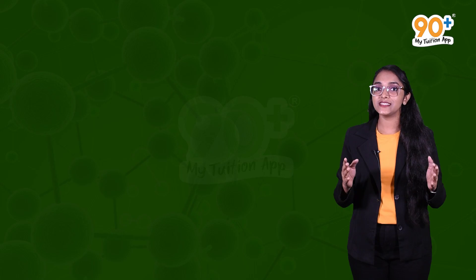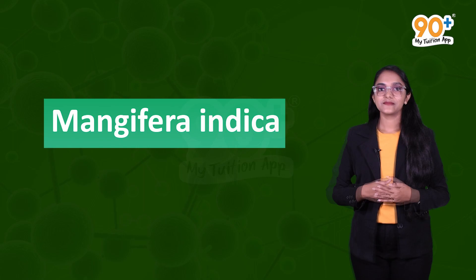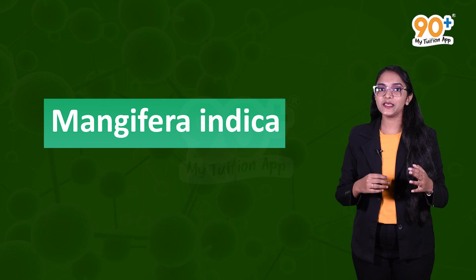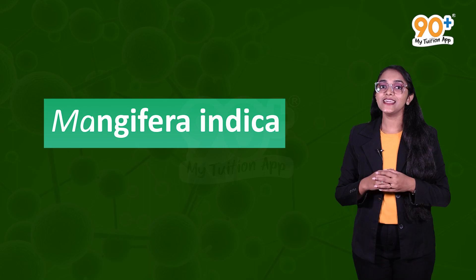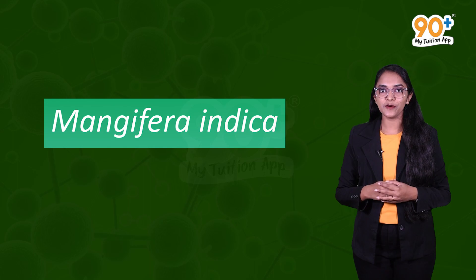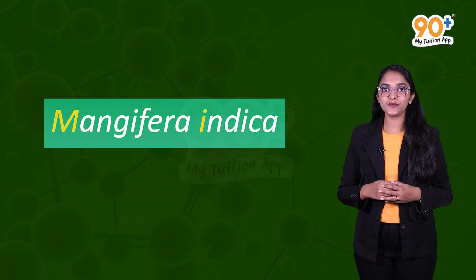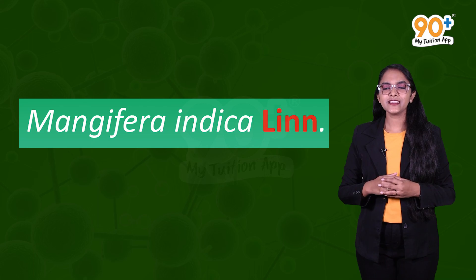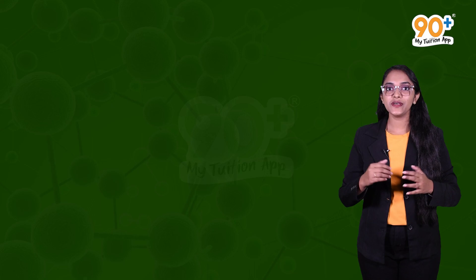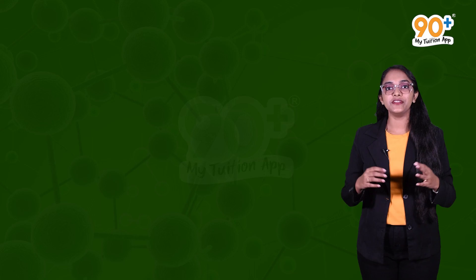The first word is the genus name and the second is the specific epithet, so the scientific name of mango is Mangifera indica. If handwritten, it should be underlined separately; if printed, in italics. The first name starts with a capital letter and the second with a small letter. You may also see it written as Mangifera indica Linn — 'Linn' is the author's name. It was Carl Linnaeus who identified and described Mangifera indica.